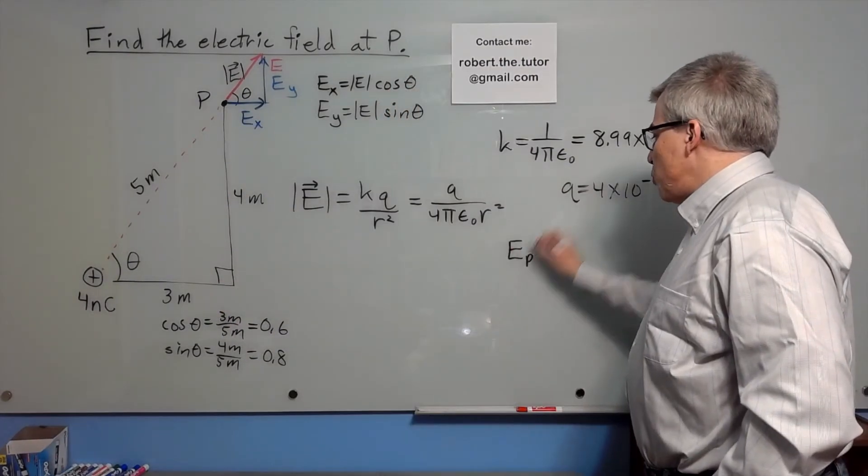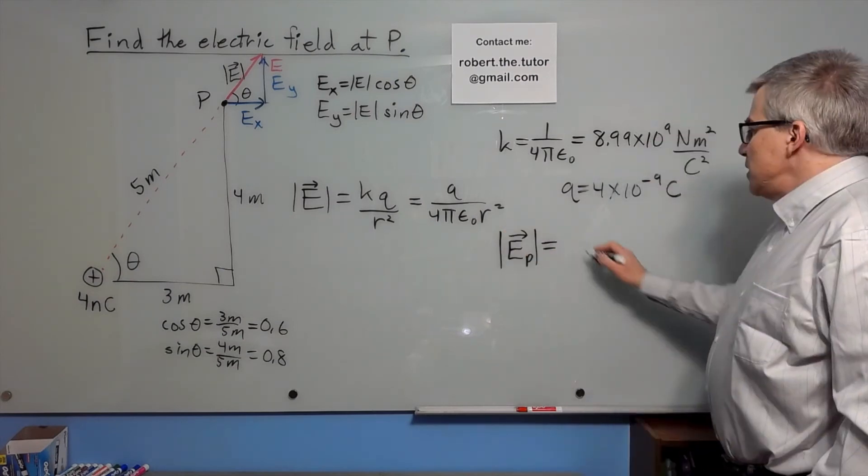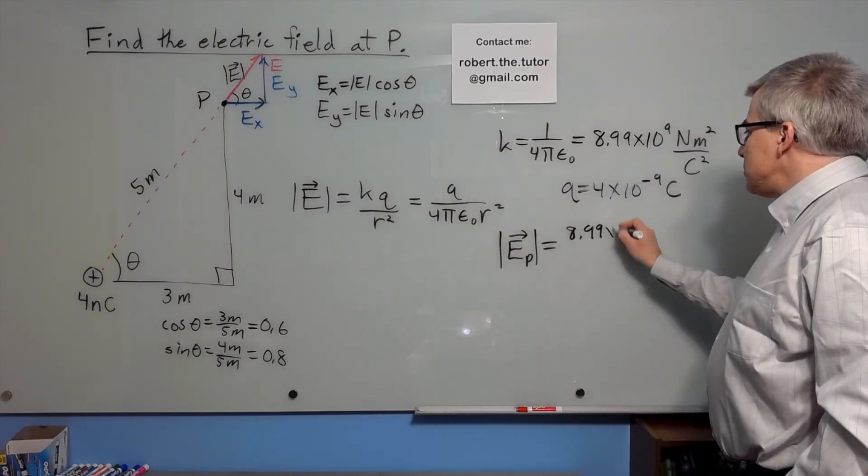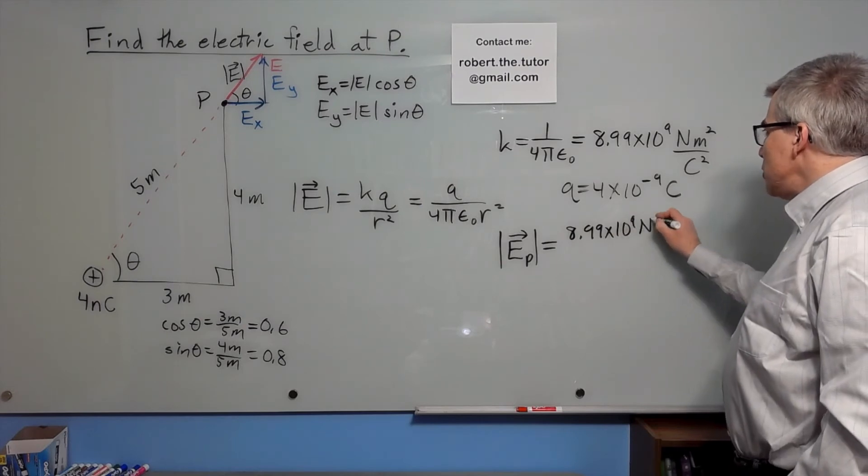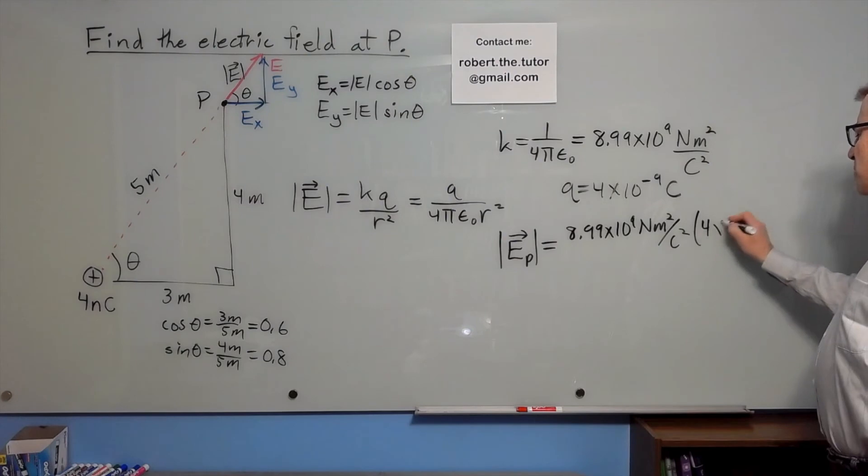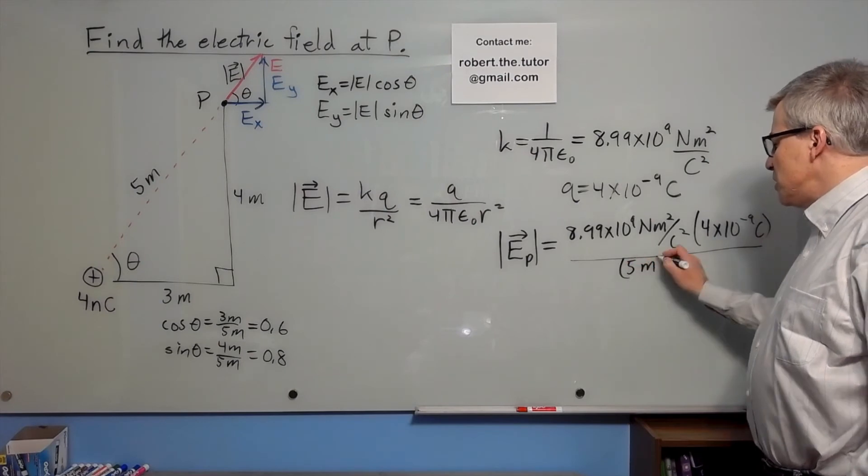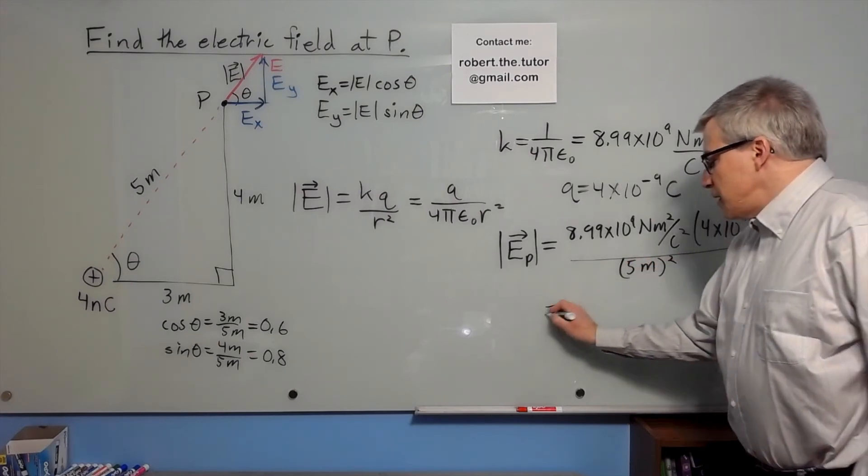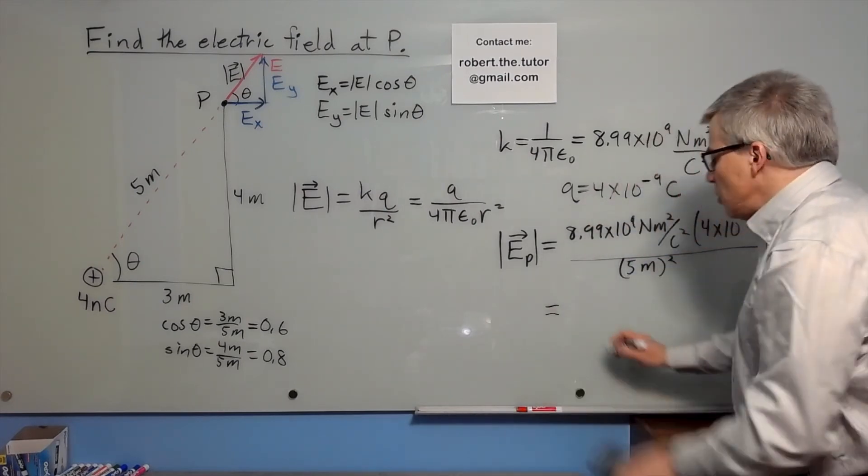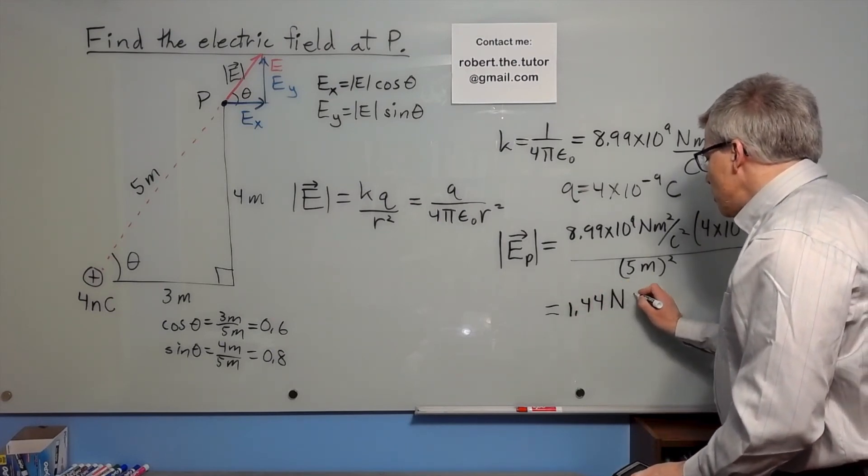So the electric field at point P in magnitude of the vector is 8.99 times 10 to the ninth newton meters squared per coulomb squared times 4 times 10 to the negative ninth coulombs divided by 5 meters squared. And that works out to 1.44 newtons per coulomb.